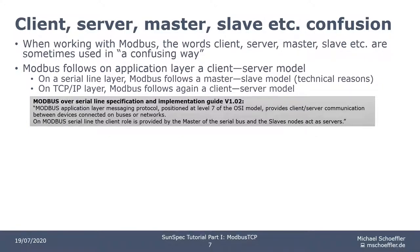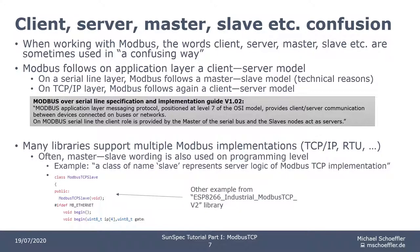Unfortunately, there is still some confusion going on. Many libraries support multiple Modbus protocol implementations, and very often you find the master-slave wording also at the programming level. As a result, there are many Modbus TCP/IP implementations that use the terms master and slave, which belong to the serial line protocol implementations. Here is an example from an ESP8266 library. I want to add clearly that I do not want to blame this library — I do not want to say that it is wrong to use master-slave on TCP/IP level. I just want you to know that there is some confusion, but if you know about all of this, the wording confusion won't be that much of a problem for you.